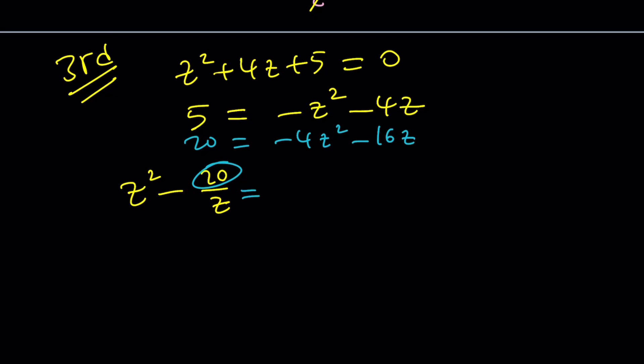So now this is going to be z squared minus negative 4z squared minus 16z all over z. But the double negative again is going to make everything positive. And we can go ahead and actually factor out 4z. And that gives us z plus 4 divided by z. And the z cancels out.